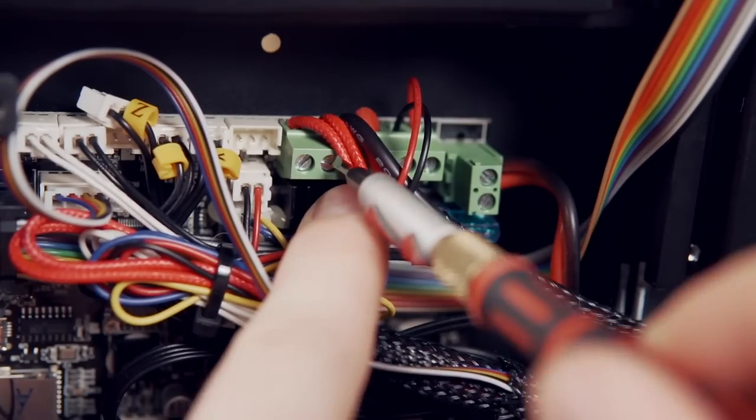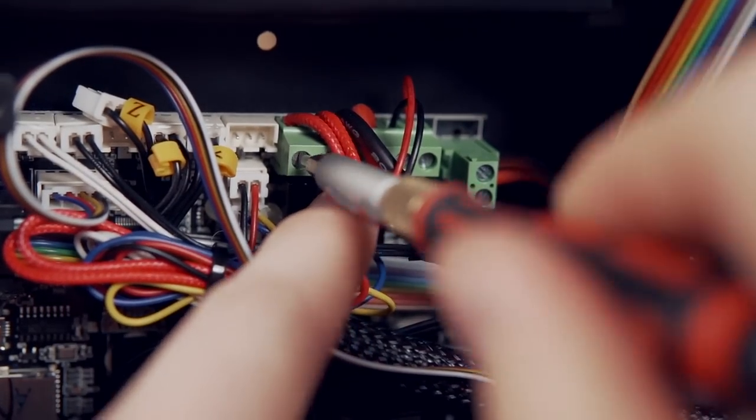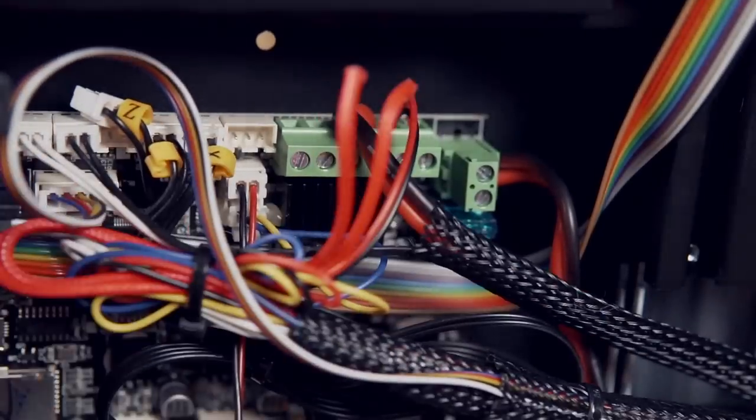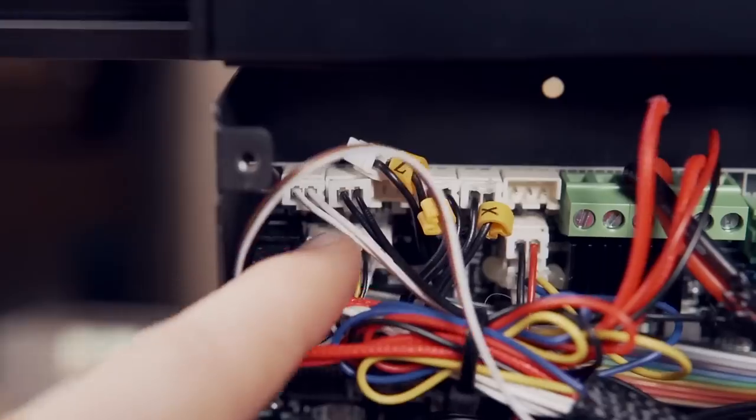Inside we'll need to loosen the two screws that are holding the hotend cables into the screw down terminal. In my instance those were the left most two cables, and then we need to remove the old thermistor which is just a two pin plug that was in the very corner.